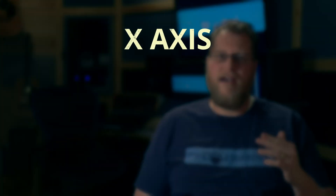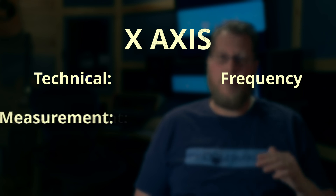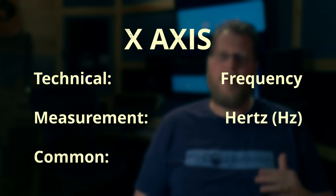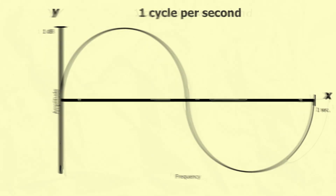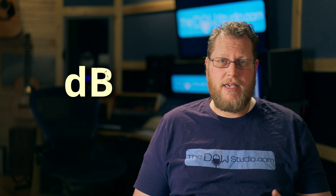So to sum up the x-axis: we have our technical term, frequency; our measurement, hertz; and our common term, pitch. The y-axis, or vertical axis, represents amplitude, or how much pressure the wave has, or how much the air is compressed. Amplitude is measured in decibels, which is written as dB, with a capital B.